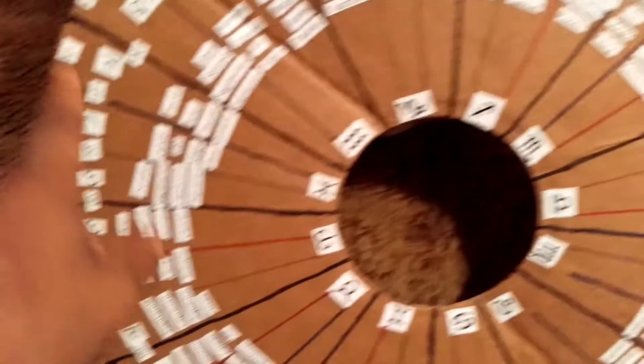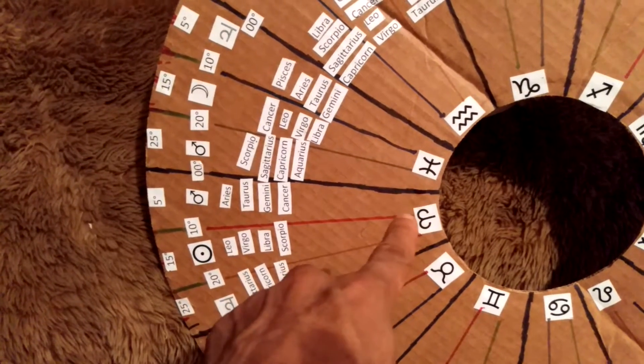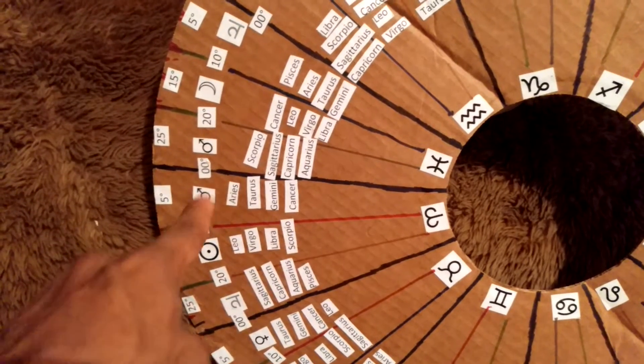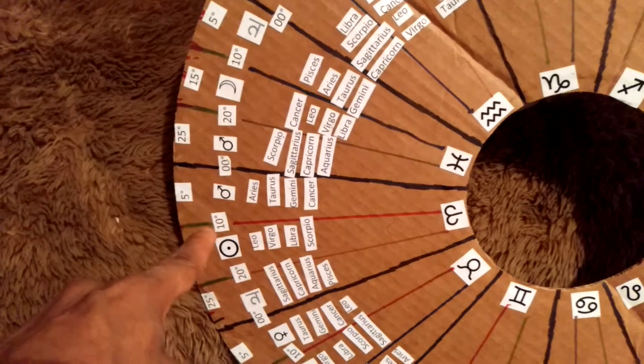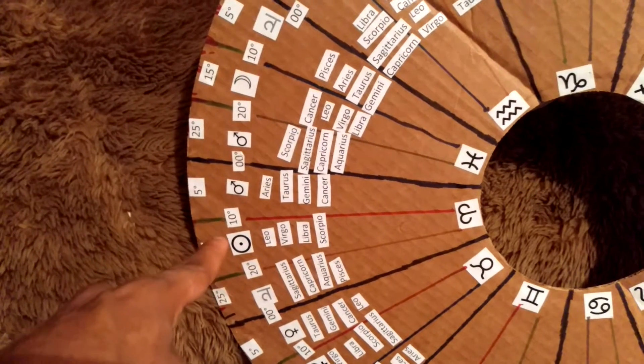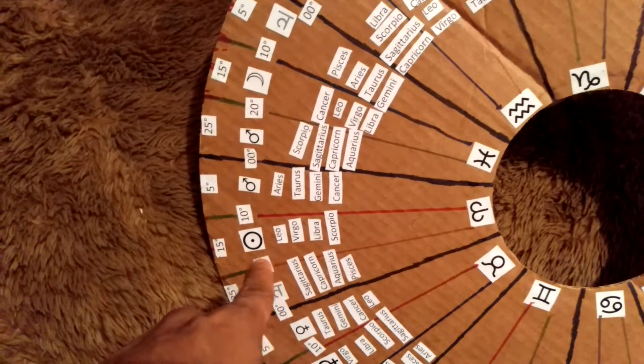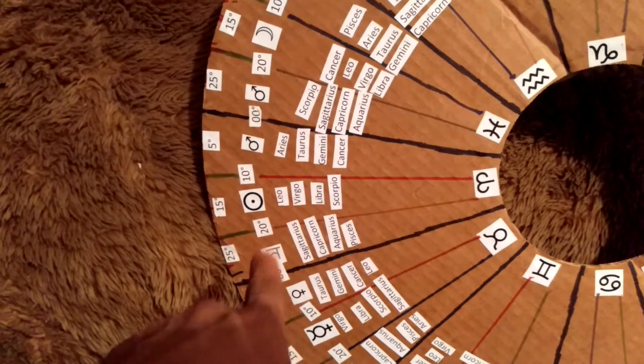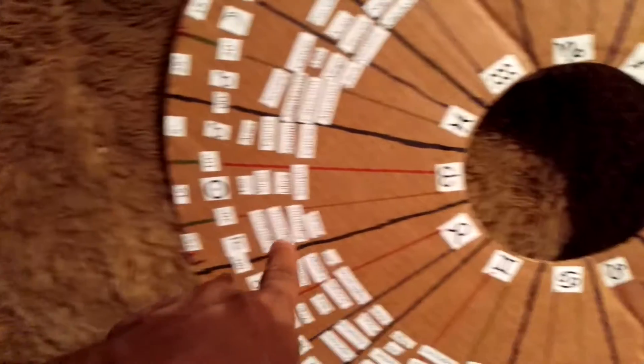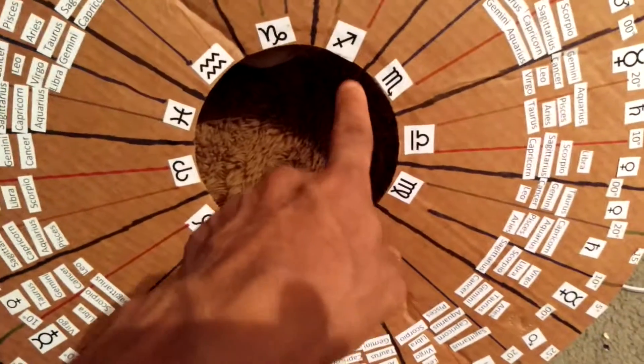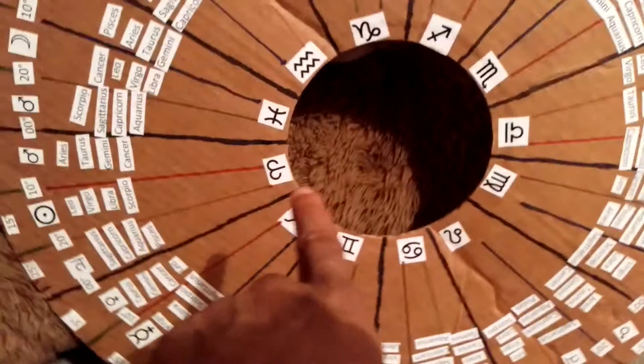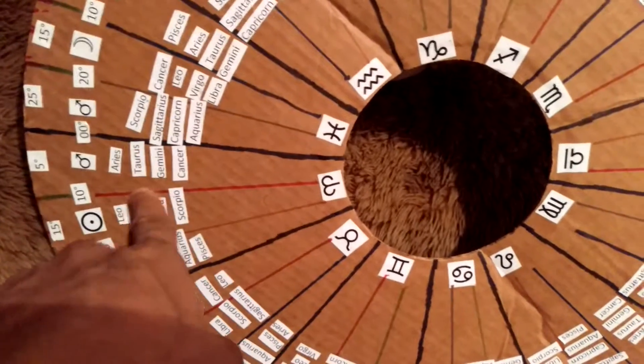Alright, so each sign, Aries is a fire sign, so the first 10 degrees is ruled by Mars, because Mars rules Aries, right. The second 10 degrees is ruled by the sun, because that's the next fire sign, you see, Leo. The last 10 degrees is ruled by Jupiter, because that's the third fire sign, Sag, Jupiter.